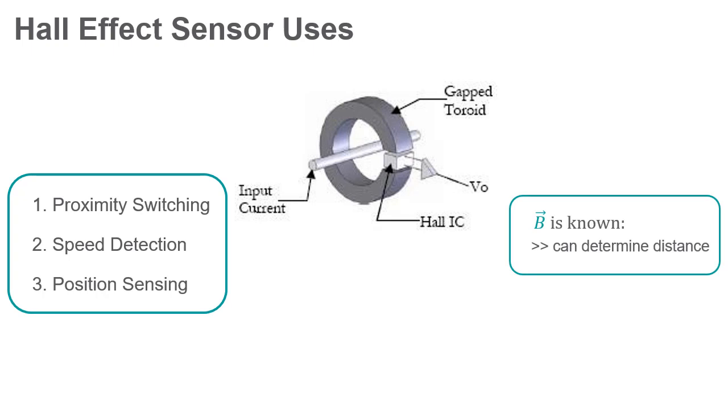If a magnetic field is known, then you can use the Hall effect to determine its distance from the Hall plate.